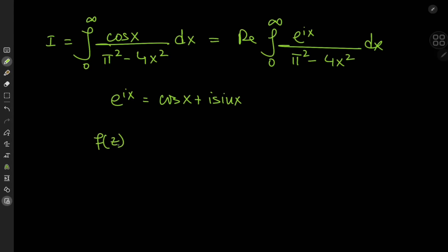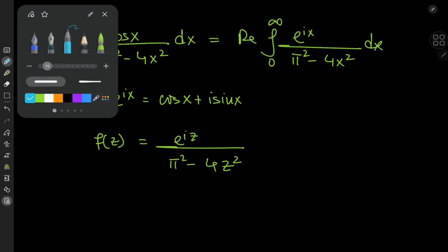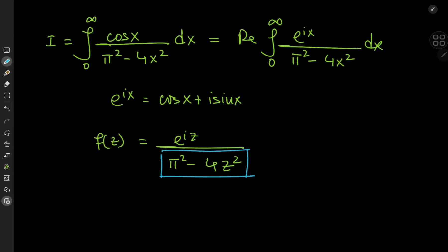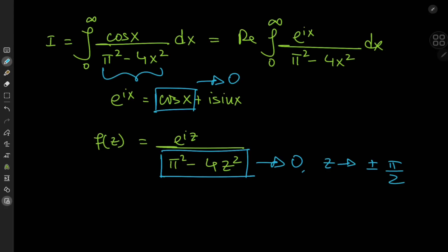Now we define a suitable complex-valued function f(z) = e^(iz) divided by (π² − 4z²). The denominator approaches 0 as z approaches ±π/2. The cosine part of the exponential also approaches 0 at those points, so that's a removable singularity for the target integral. The problem arises from the sine function — it does not approach 0 as z tends to ±π/2; it tends to ±1 respectively. So these are the singularities we want to avoid in designing our contour.